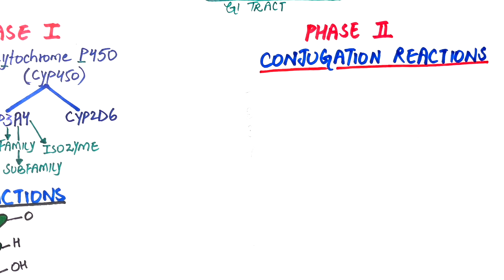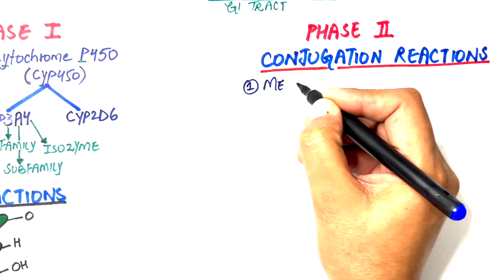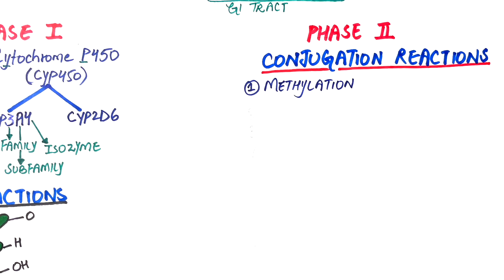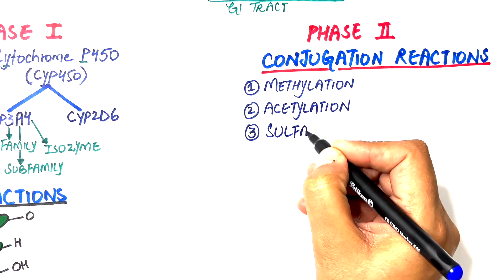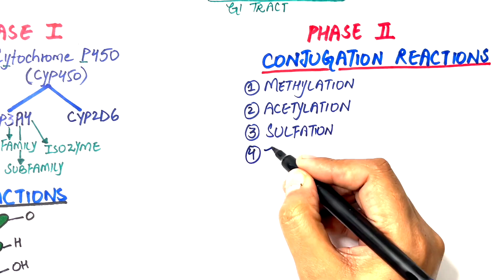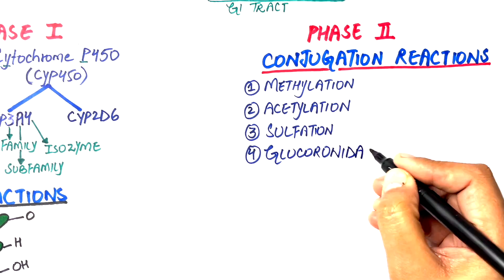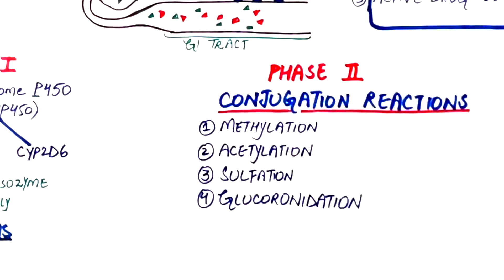These reactions include adding on a methyl group to the drug by a process called methylation, adding on an acetyl group by acetylation, adding on a sulfur group by sulfation, and lastly adding on a glucuronic molecule by glucuronidation.